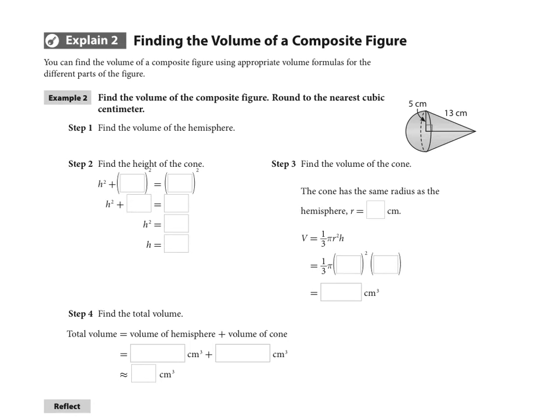So just using Pythagorean theorem here, we know we have h squared plus 5 squared, one of the legs, is going to equal the hypotenuse, 13 squared.